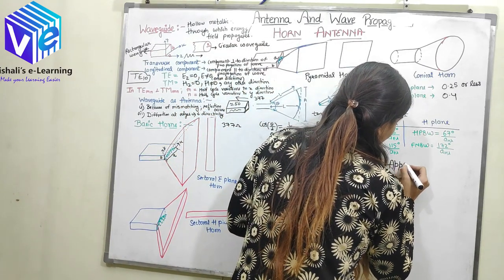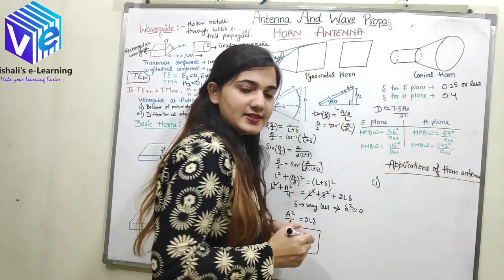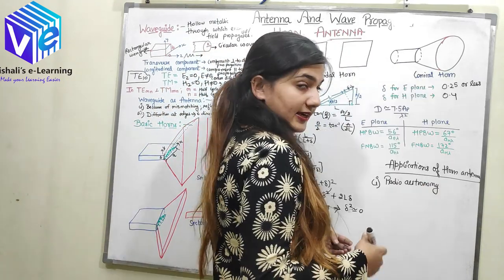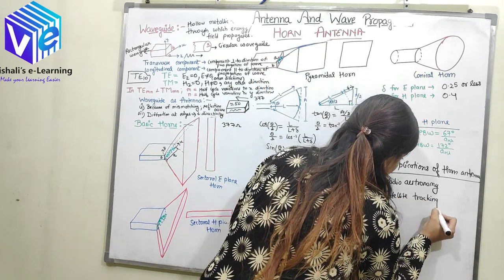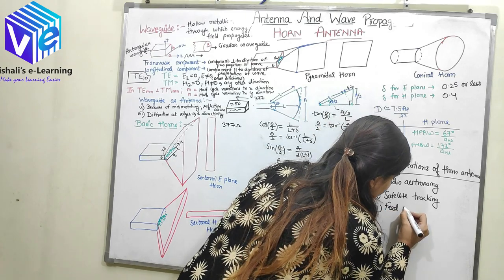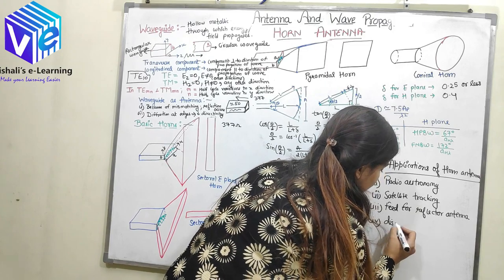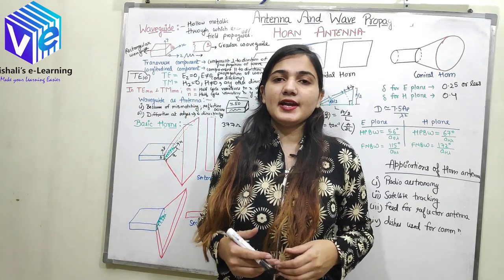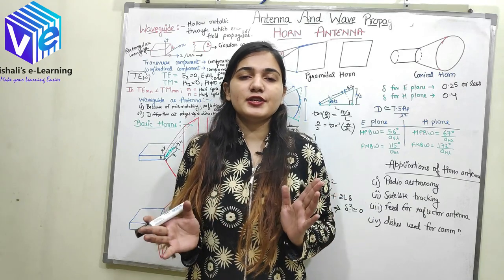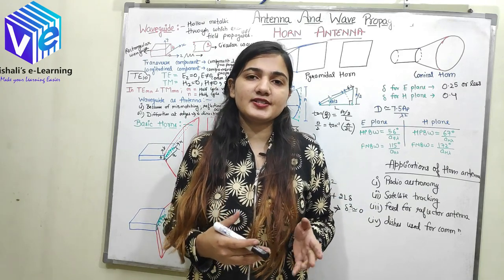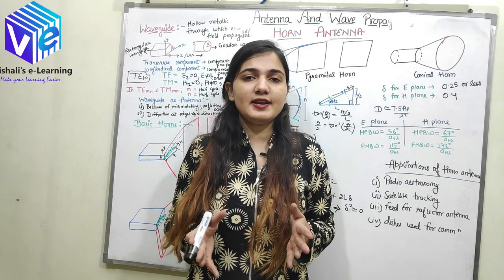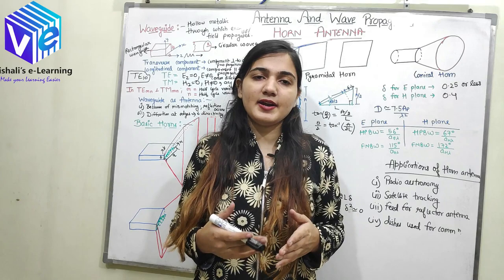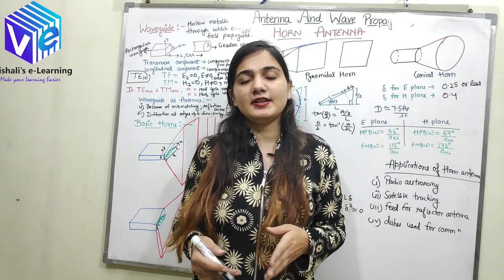Now we will see the applications of horn antenna. First, it is used in radio astronomy. Second, it is used for satellite tracking. Third, it is used as a feed for reflector antenna. It is also used with dishes for communication. However, there is a limitation: if we want to increase the gain, the size of the horn increases. We don't want to increase the size beyond a certain limit, so for higher gain purposes, a parabolic antenna or any other antenna would be recommended instead.